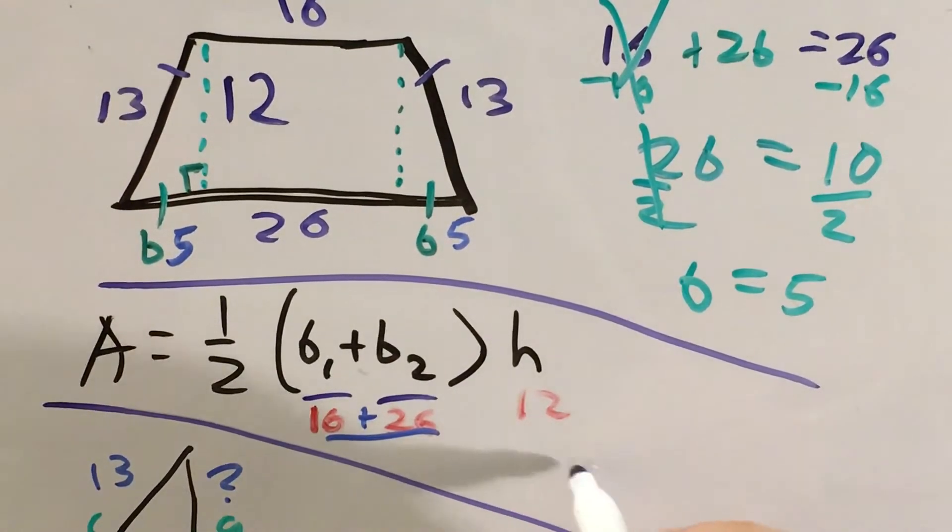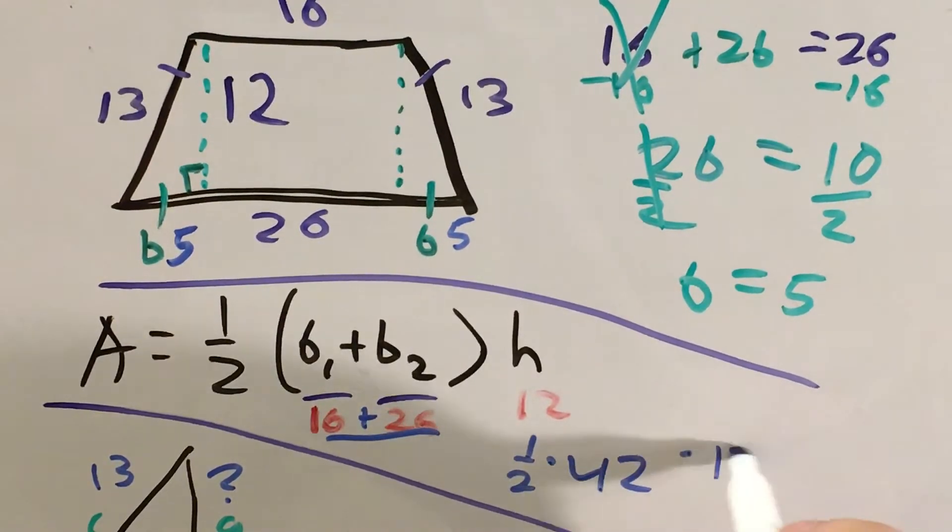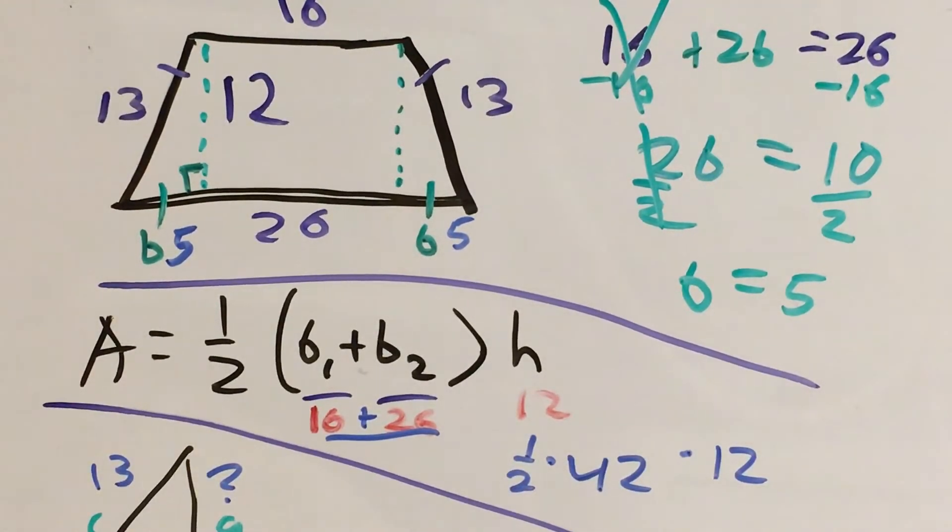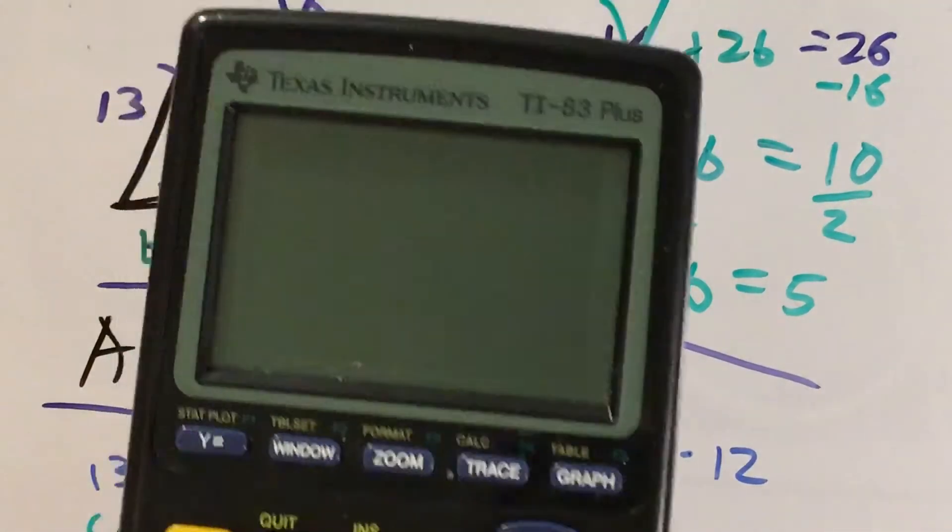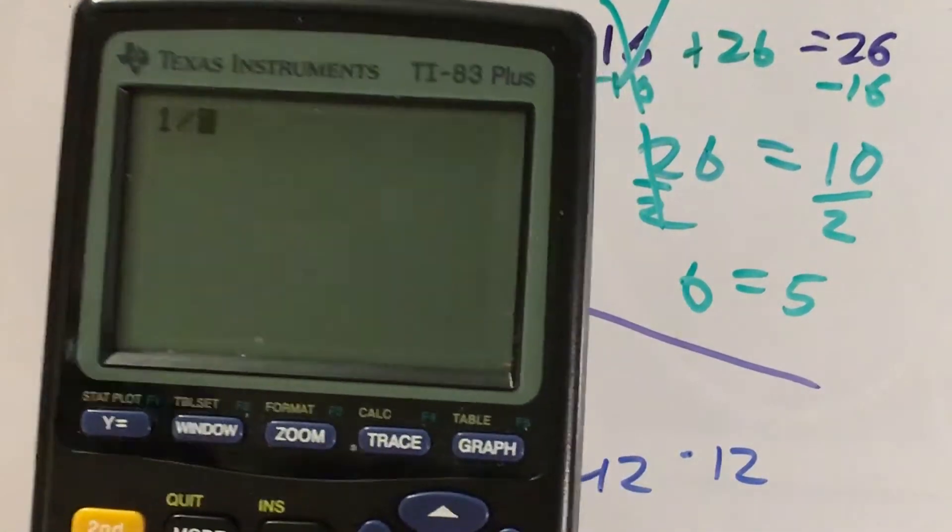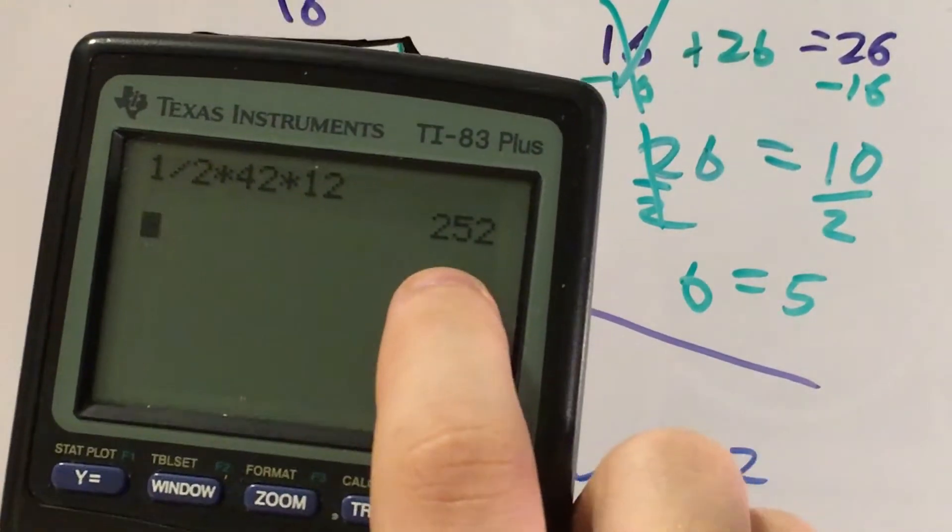That is 42. So this is 1/2 times 42 times 12. And if I plug all that into my calculator, 1/2 times 42 times 12, I get 252.